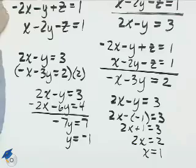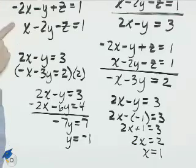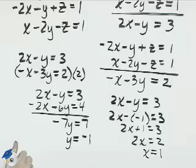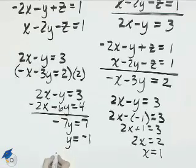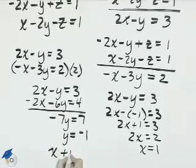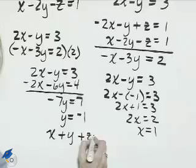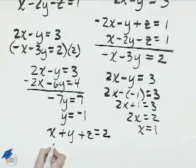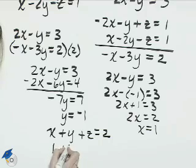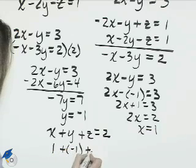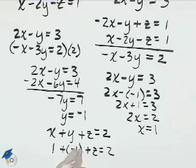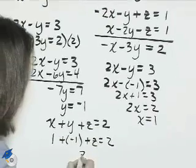Now we have y equals negative 1, and x equals positive 1, and we'll replace in one of these equations, the x of a 1 and the y of a negative 1, to solve for z. I'll go with the first equation. x plus y plus z equals 2. In place of y is negative 1, in place of x is positive 1. That's 1 plus negative 1 plus z equals 2. 1 plus negative 1 is 0. That leaves us with z is equal to 2.